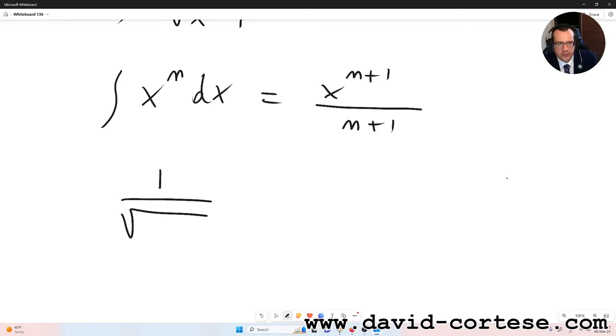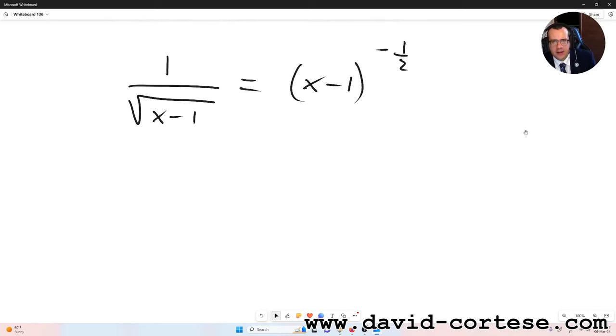So we can rewrite the integral as integral of one over square root of x minus one dx is equal to integral of x minus one raised to minus one over two dx.